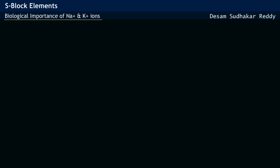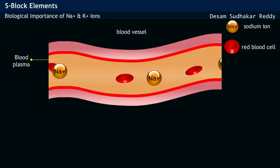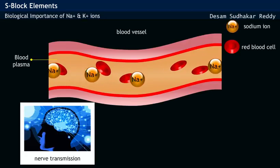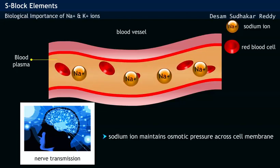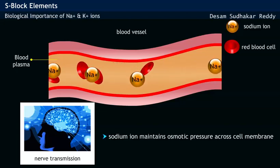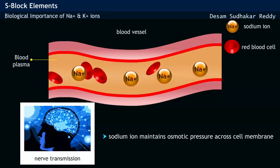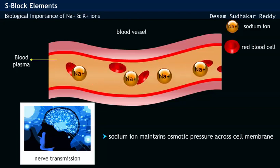Biological Importance of Sodium Ion and Potassium Ions. Sodium ion is present in the blood plasma, helps in the transmission of nerve impulse, and maintains osmotic pressure of the cell by the flow of water across the cell membrane.